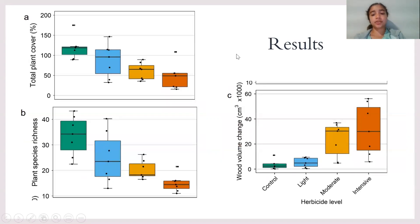For the results, when it came to bottom up, which came to the herbicide level, there was a decrease in total plant cover as herbicide level went up. There was a decrease in plant species richness as herbicide level went up, and there was an increase in wood volume change when the herbicide level went up, which wood volume is the amount of wood present in the plant.